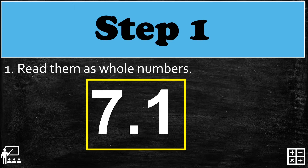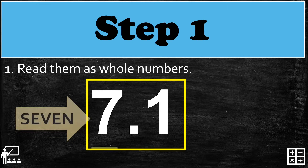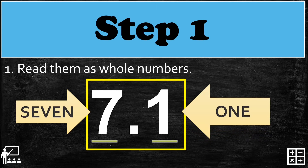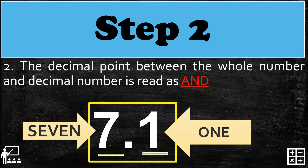Let's try another example. I have here seven point one. Again, we're going to read the whole number part, which is seven, and the fractional part, which is one. Let's proceed to step two: the decimal point between the whole number and decimal number is read as 'and.'